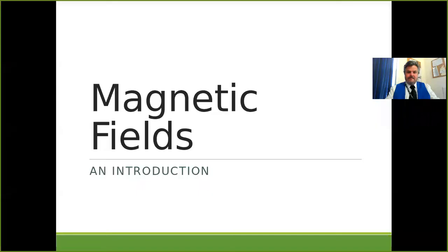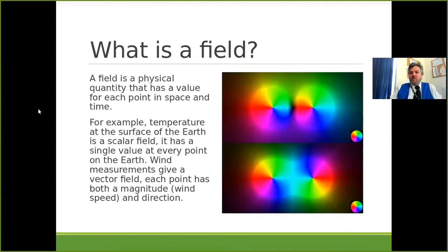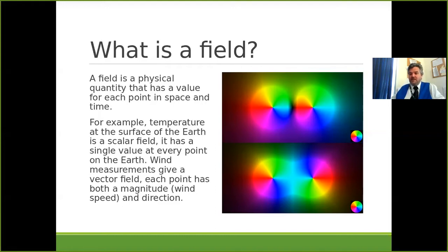We're starting off with magnetic fields. A field is a physical quantity that has a value for each point in space and time. More simply, a field is an area where a force can be felt without contact. You've looked at gravitational fields and electric fields - a gravitational field doesn't require contact; you still experience the force of gravity even if you're in mid-air.